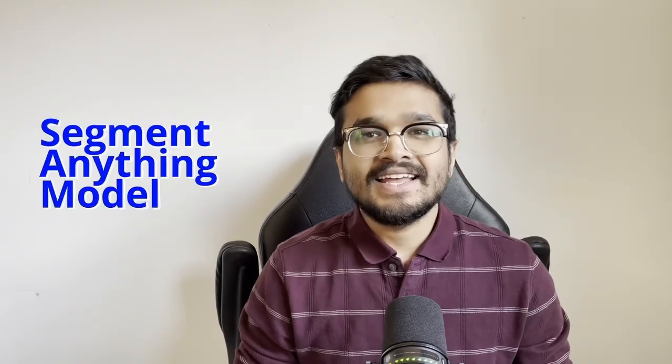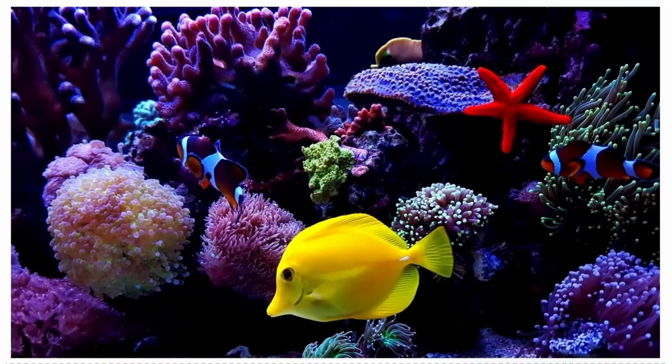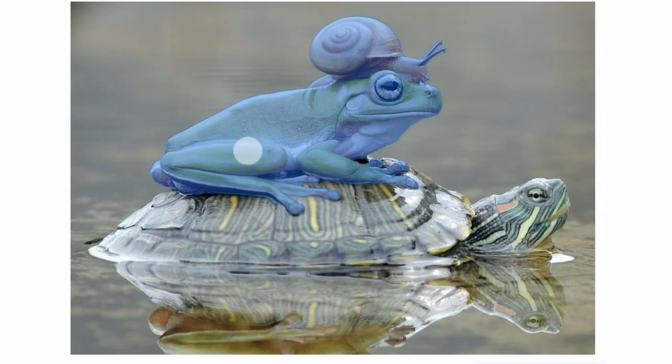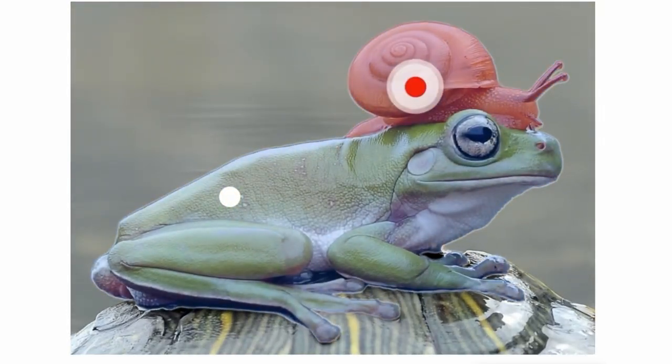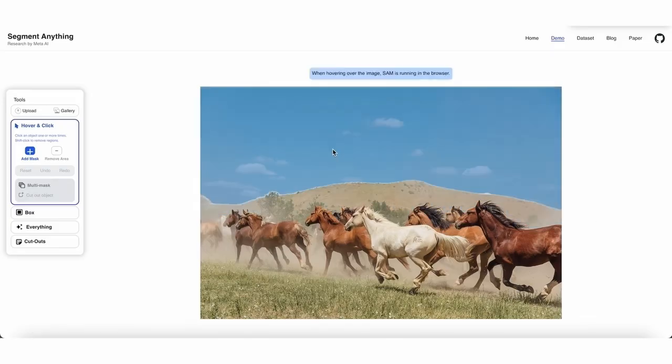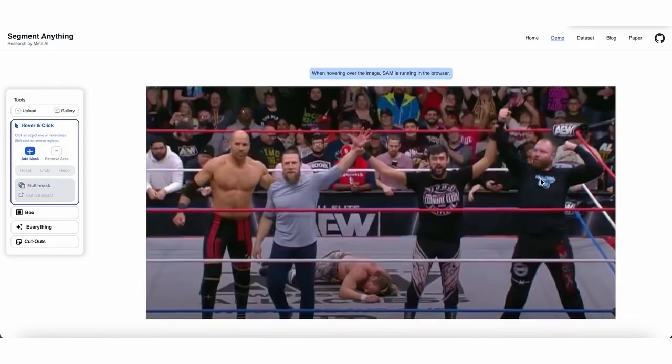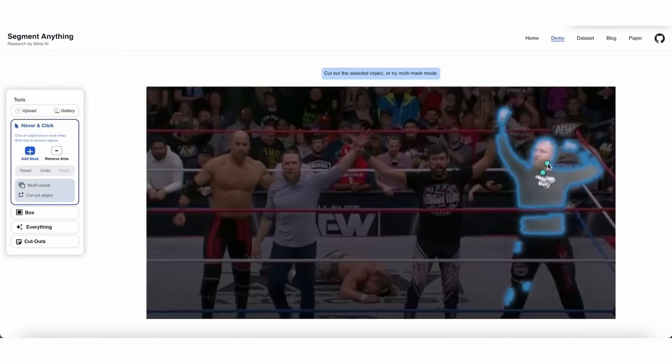Hello guys, meet SAM, Meta's new segment anything model that can literally segment anything. SAM is the world's first massive scaled, promptable, interactive foundation image segmentation model. You can upload a new image and prompt SAM with clicks and bounding boxes and the model is able to segment an arbitrary number of objects at multiple levels of granularity, the whole object, a part of it, or even a sub-part of it.